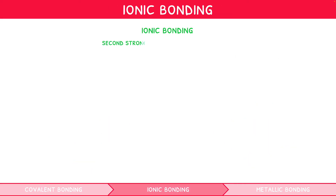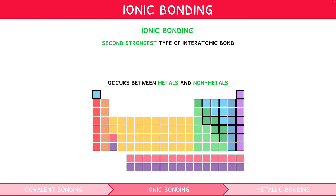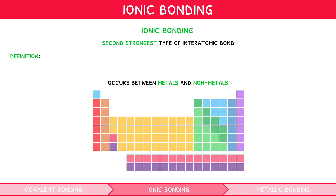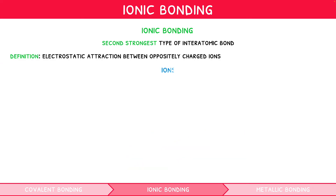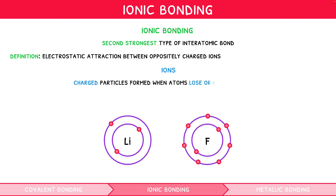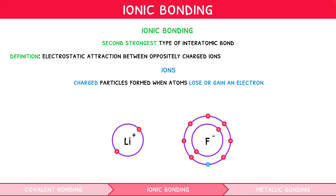Ionic bonding is the second strongest type of interatomic bond, and occurs between atoms of metals and nonmetals. It is defined as the electrostatic attraction between oppositely charged ions. Ions are charged particles which are formed when atoms lose or gain an electron. If an atom loses an electron, it becomes a positive ion, and if it gains one, it becomes a negative ion. A useful tip for the exam is that metals always form positive ions, known as cations, and nonmetals always form negative ions, known as anions.